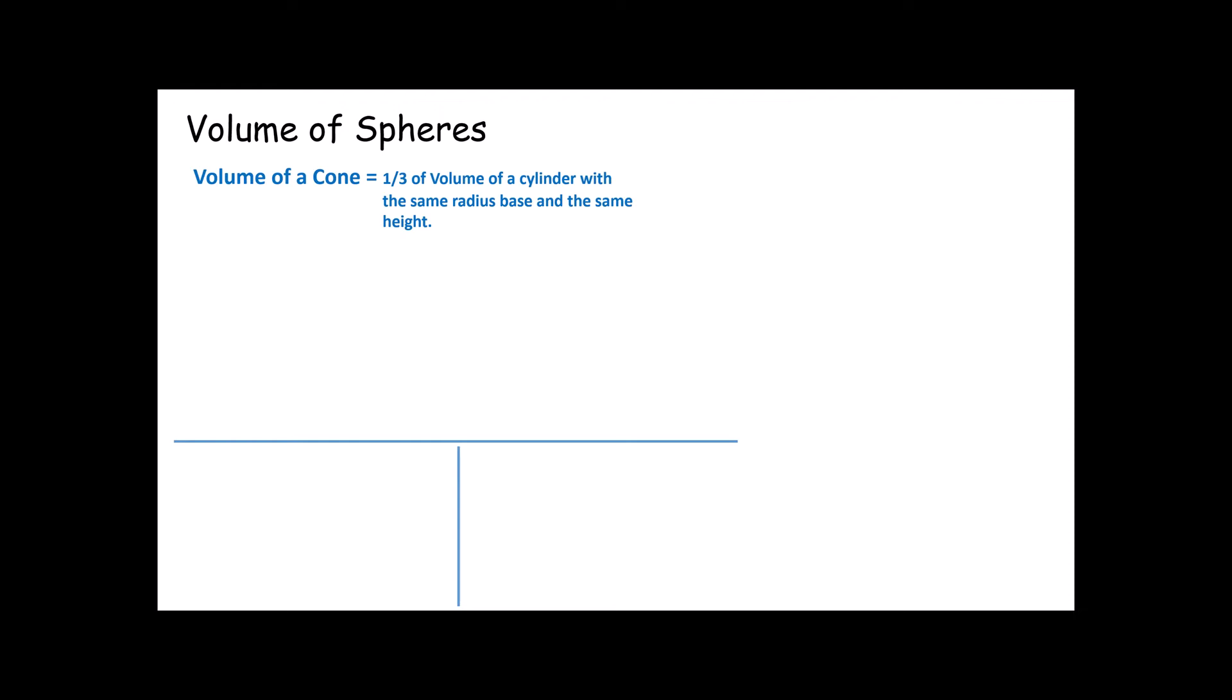Ms. Osterwish took a cone and she actually filled it with water and dumped it into a cylinder, and she showed that it takes three cones to fill a cylinder. And because of that, we say that a cone is one third of a cylinder, or in this case the volume of a cone is one third the volume of a cylinder.